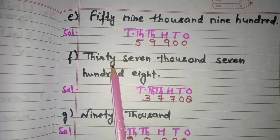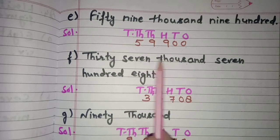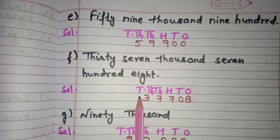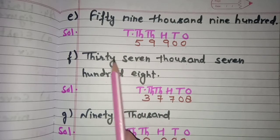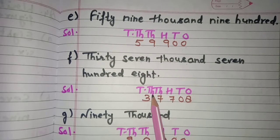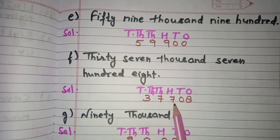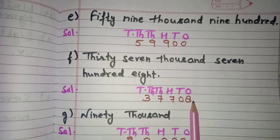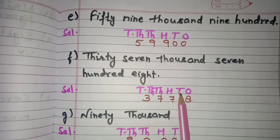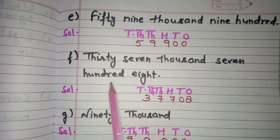Now next part f: 37,708. Again 37,000 is double digit, so we mention places up to ten thousands — ones, tens, hundreds, thousands, ten thousands. So 37,000 means 3 at ten thousands and 7 at thousands. 700 means 7 at hundreds place. 8 is single digit so it is written at ones place and at tens we write 0. So 37,708 is the figure for thirty-seven thousand, seven hundred and eight.